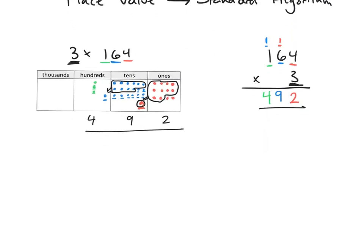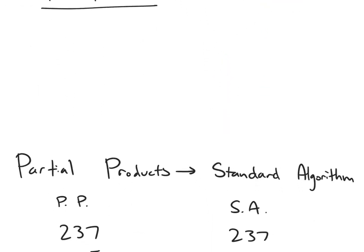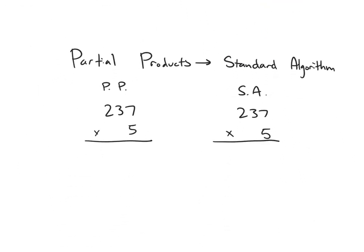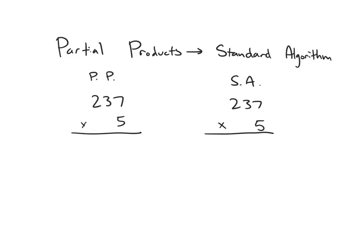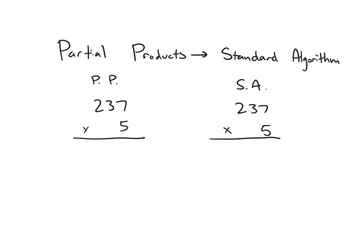The connection is a little bit more clear between the strategies when we look at the partial product strategy versus the standard algorithm. I'm going to be solving the same type of problem — a 3-digit number by a 1-digit number — first using the partial product strategy, and then using the standard algorithm. I'm going to use different colors to represent the different place values that I'm multiplying.